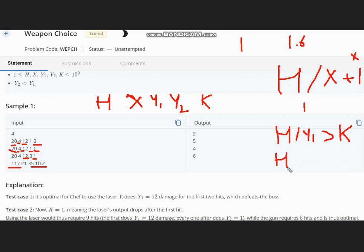So first we will calculate how much is remaining, so we will subtract Y1 into K. So this much hits are remaining for now. So our laser would be K plus H divided by Y2. So this value is for the laser.